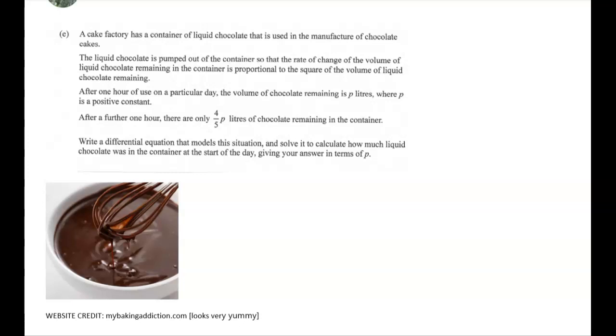We've got a cake factory and it's got a container of liquid chocolate used to make cakes. It's pumped out of the container so the rate of change of the volume of liquid chocolate remaining is proportional to the square of the volume of liquid chocolate remaining. After one hour of use on a particular day the volume remaining is p liters, and after a further one hour there are only four-fifths of p liters left in the container. So we have to write a DE and solve it to figure out how much liquid chocolate started out in the container at the start of the day.